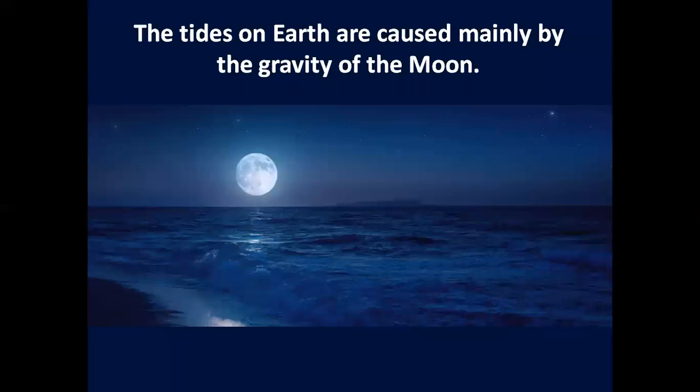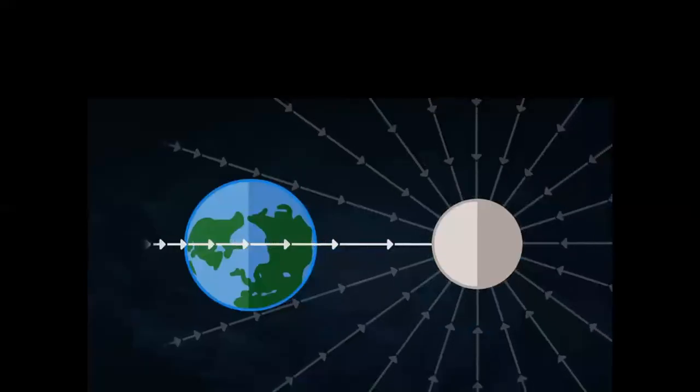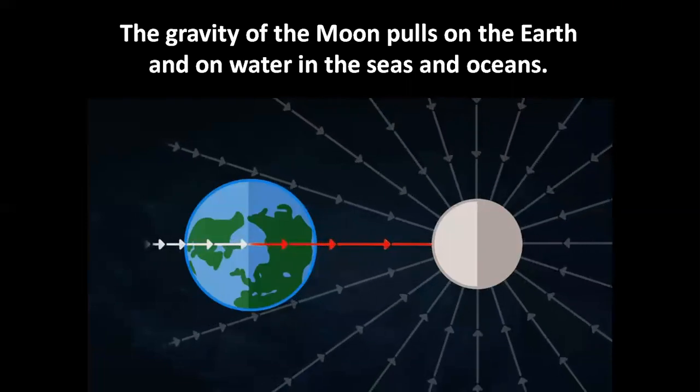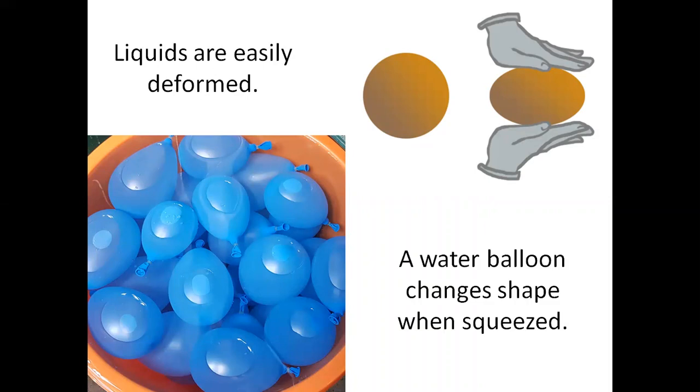The tides on Earth are caused mainly by the gravity of the Moon. On Earth's surface, the Moon's gravitational force is 10 million times smaller than the Earth's gravitational force. The gravity of the Moon pulls on the Earth and on water in the seas and oceans. Liquids are easily deformed. A water balloon changes shape when squeezed.